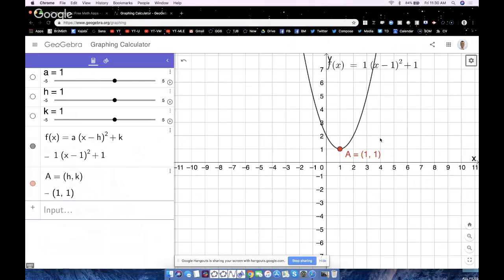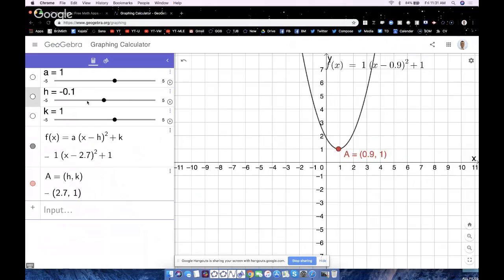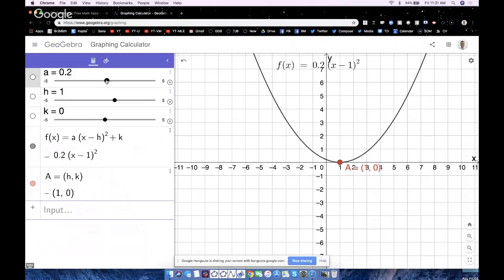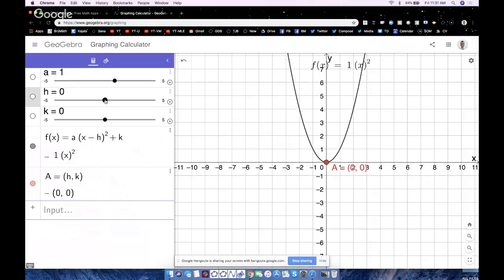Maybe I want to save the students a few minutes and pre-construct these parameters for them so that way they can spend the class time, the limited class time, simply engaging in the discovery and discover what the H and what the K do to the graph of the parent function here. So what I'm going to do is set it up the way I normally like. Let's suppose it looks just like this.